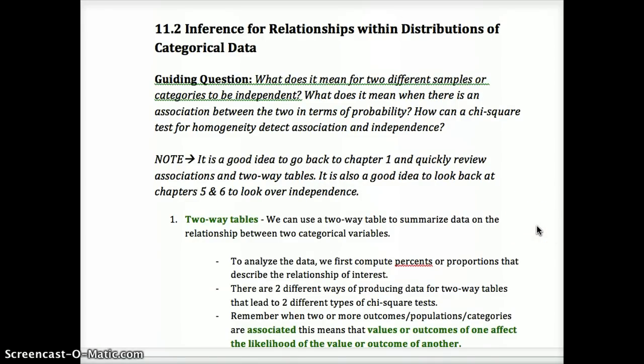We'd want to put things into percents or proportions to describe the relationship and look at segmented bar graphs and side-by-side bar graphs. If values of one variable tend to affect the values of another, that would mean an association. If there is an association, the two variables are not independent. If values of one variable do not affect another, they would be independent variables.